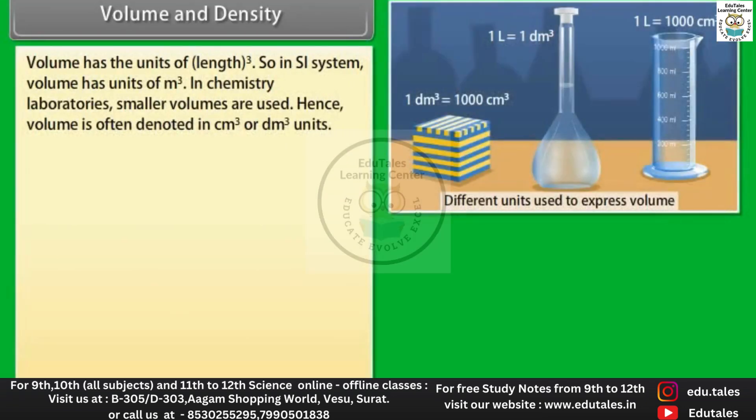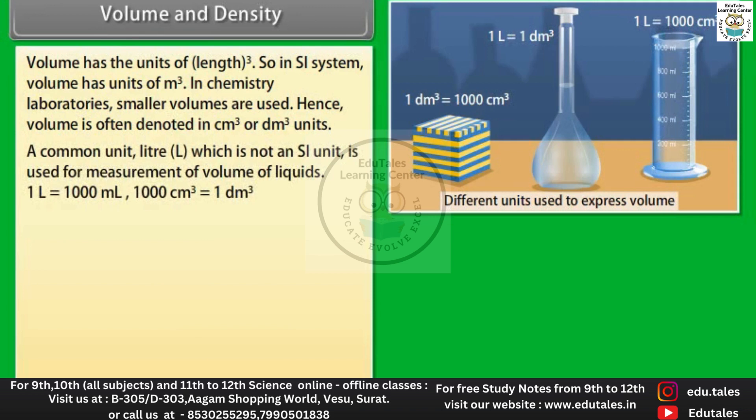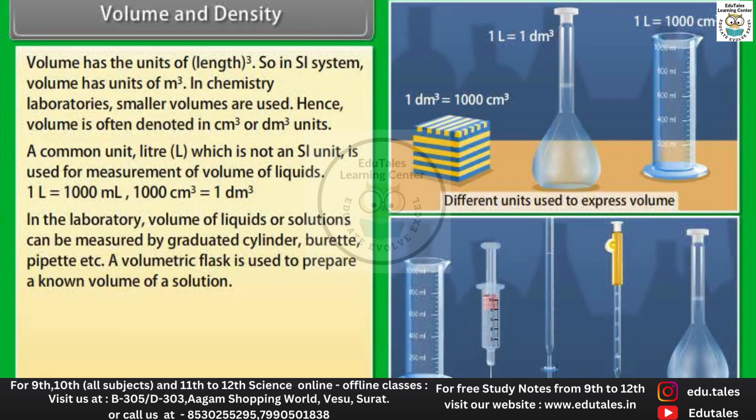Volume has the units of length raised to the power 3, so in SI system, volume has units of meter cube. In chemistry laboratories, smaller volumes are used, hence volume is often denoted in centimeter cube or decimeter cube units. A common unit, liter (L), which is not an SI unit, is used for measurement of volume of liquids. One liter is equal to 1,000 milliliter. 1,000 centimeter cube is equal to 1 decimeter cube. In the laboratory, volume of liquids or solutions can be measured by graduated cylinder, burette, pipette. A volumetric flask is used to prepare a known volume of a solution.